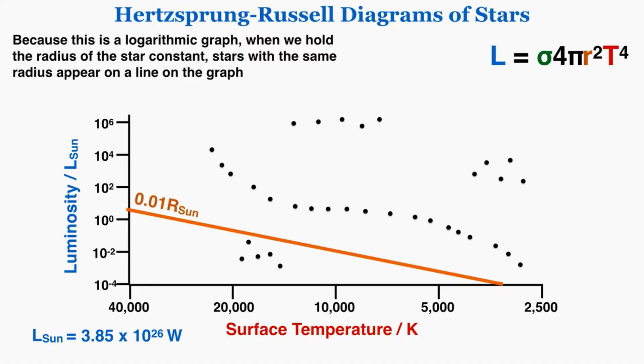As an example, any star that appears exactly on this line has a radius of about 1/100th of the radius of Earth's sun. Stars that appear on this line have a radius that's equal to Earth's sun, and stars that appear on this line have a radius that's 100 times larger than Earth's sun. You could draw these lines for any radius that you want.